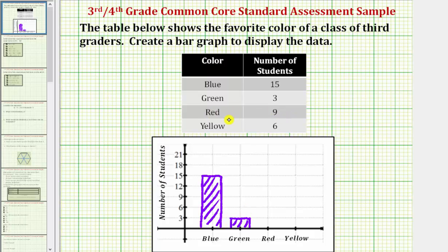Next, nine students prefer red. So here's red along the horizontal axis. We create a bar that's nine units high, this height here. And so here's the bar that represents the number of students that like the color red.